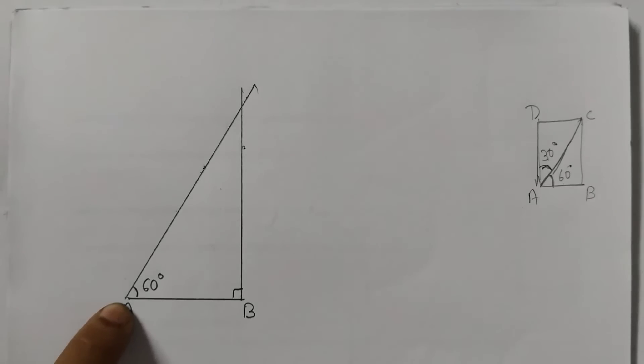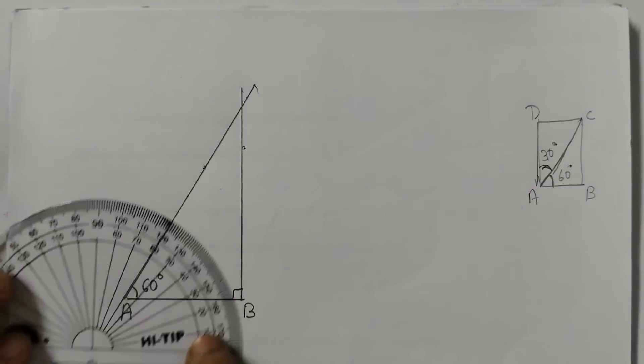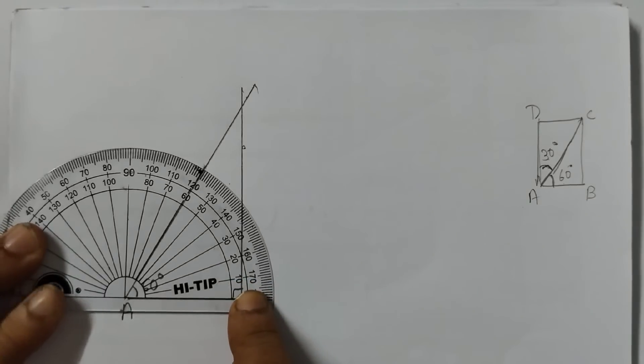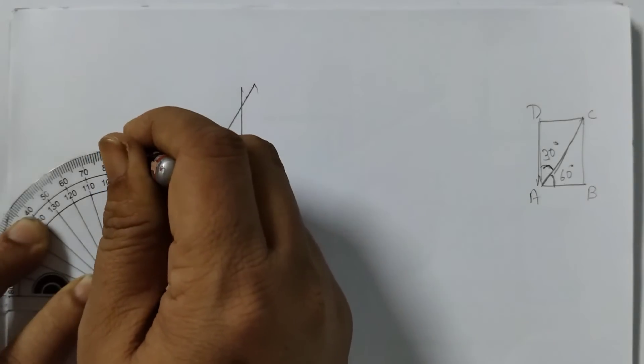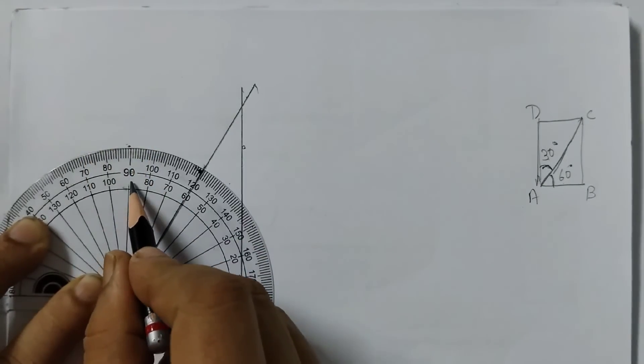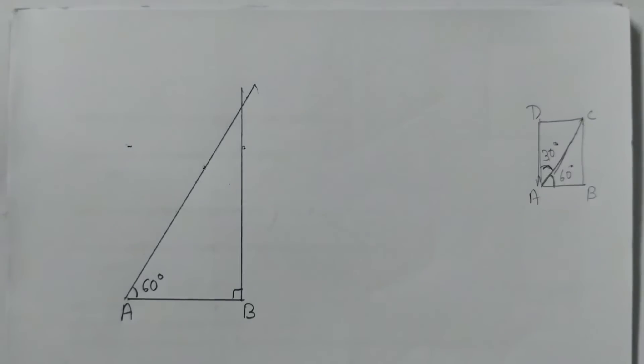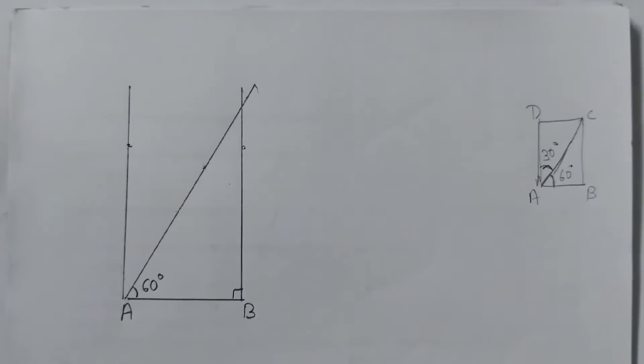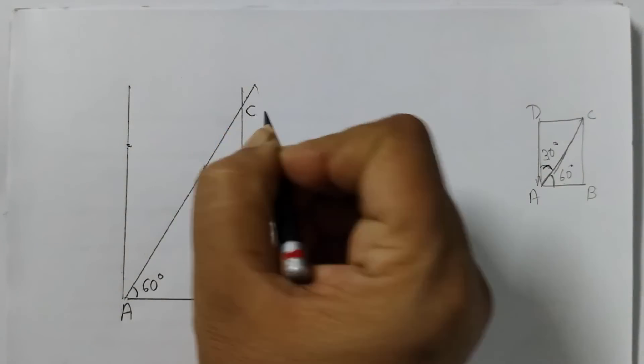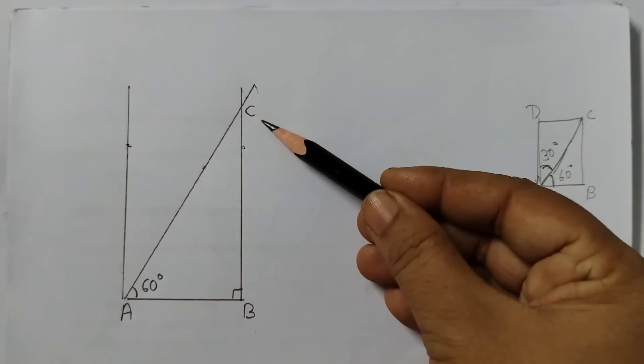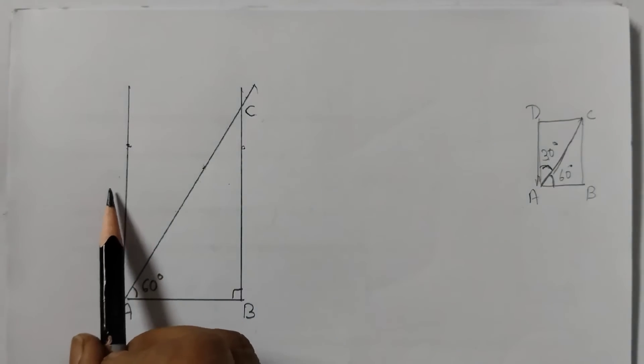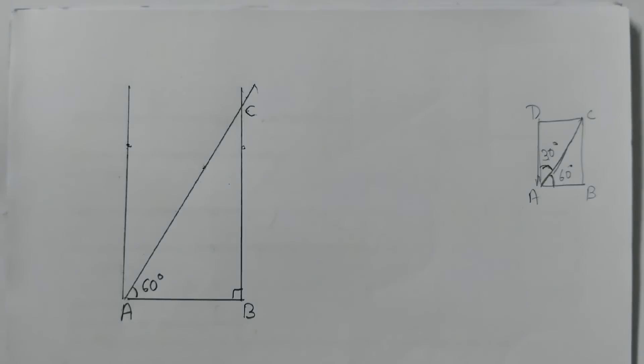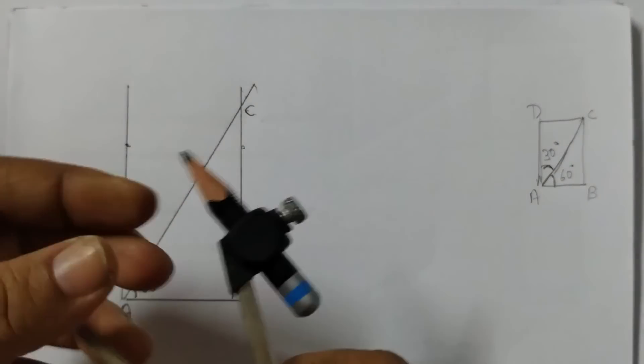Step 3. Draw a perpendicular at point A. So place the protractor like this and mark the points. So this point is C. This point is C. Now we need to mark a point on this line here, and here D. And the measurement should be equal to BC. So for that we will use our compass.